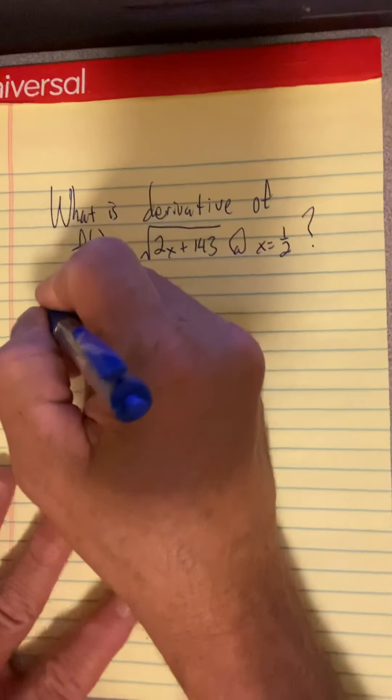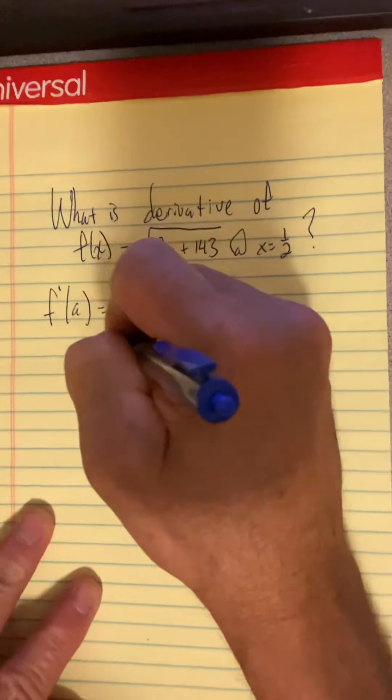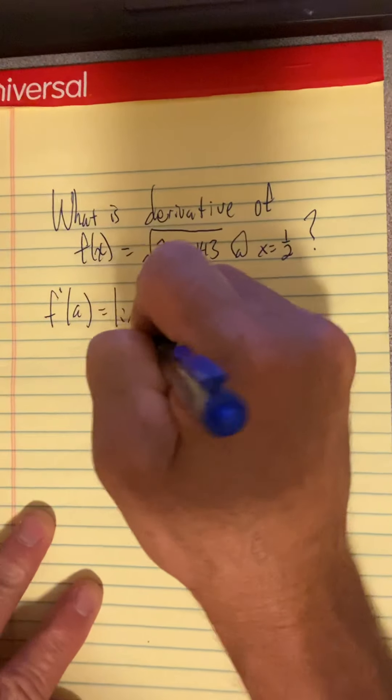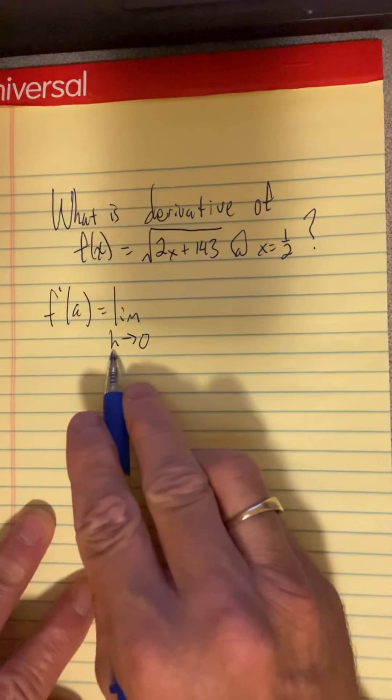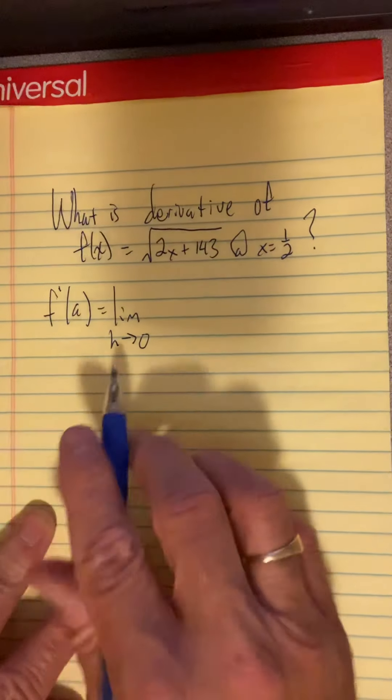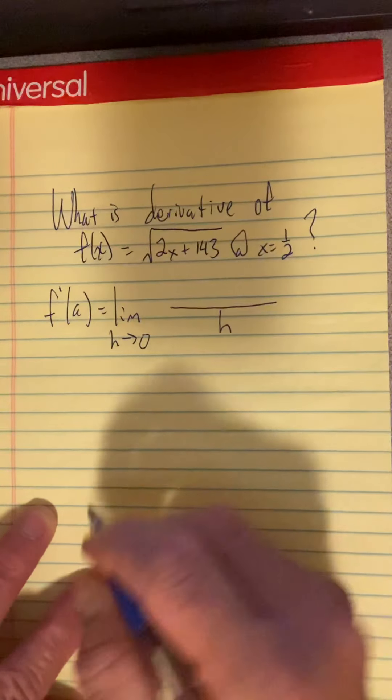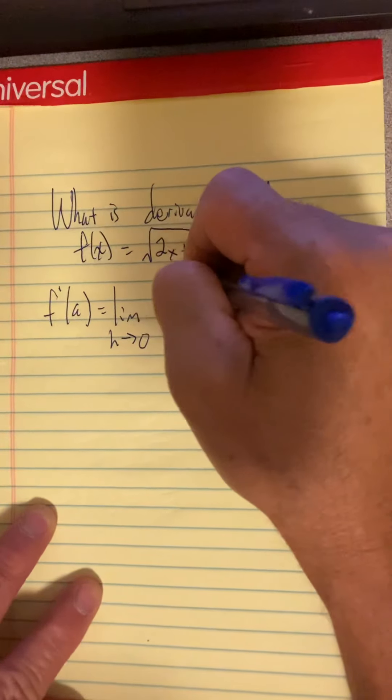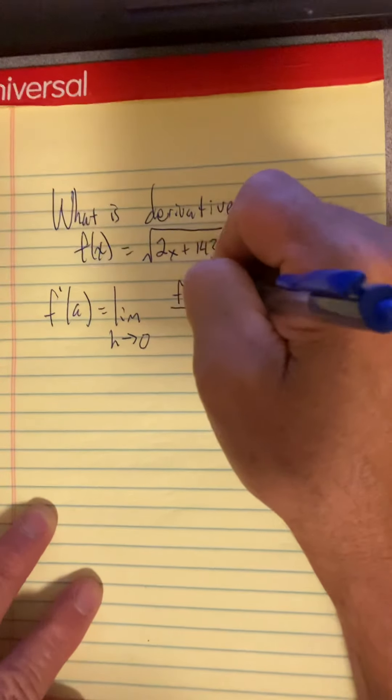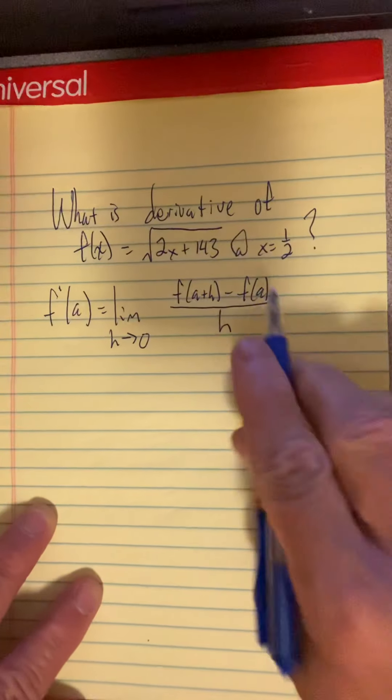Well, we learned last time that the derivative at some point a on the x-axis is the limit as the run between this point on the x-axis and the second point of the secant line collapses to zero. Remember we thought of h as the run and then the rise was f evaluated at the second point minus f evaluated at the first point.